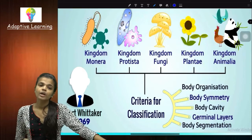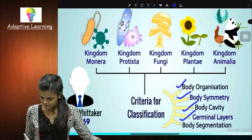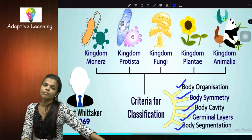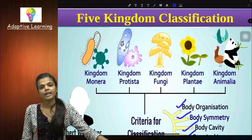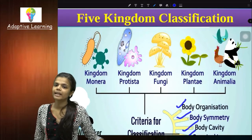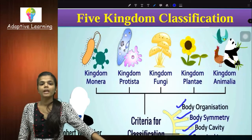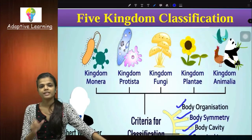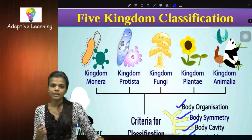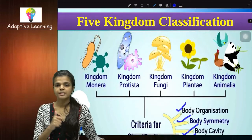Robert Whittaker considered these 5 criteria: body organization, body symmetry, body cavity, germinal layer, and body segmentation. He gave the Five Kingdom Classification — Kingdom Monera, Protista, Fungi, Plantae, and Animalia. This theory is widely accepted and is used today. There is another method called the traditional method, which we will learn later. Right now just focus on this Five Kingdom Classification given by Robert Whittaker in 1969. Kingdoms Monera, Protista, Fungi, and Plantae you have already learned.